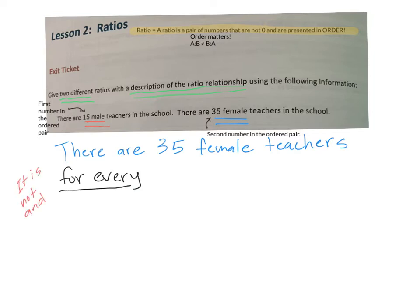and, and that is wrong. That is 100% wrong. I do not want to see the word and when you're using ratio language because it's not and. It is a comparison of two quantities or the relationship of those two quantities to each other. There are 35 female teachers for every 15 male teachers.